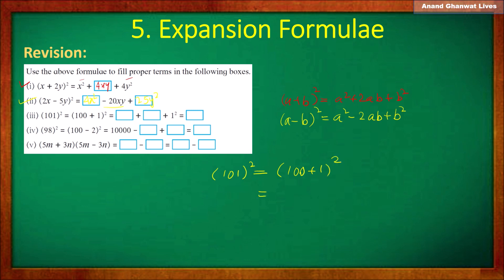Now, which formula should be used here? The first formula, since it is the addition of two terms: the square of 100, plus 2 × 100 × 1, plus the square of 1.